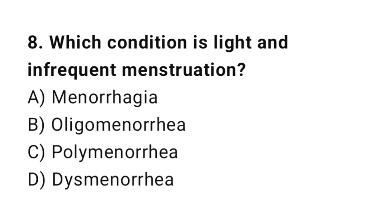Question 8. Which condition is light and infrequent menstruation? The right answer is B: Oligomenorrhea.